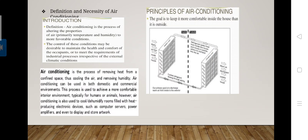The definition of air conditioning system is the process of altering the properties of air at the primary temperature and humidity to more favorable conditions. The control of these conditions may be desirable to maintain the health and comfort of the occupants or to meet the requirements of industrial processes, irrespective of external climatic conditions. Air conditioning is defined as the simultaneous control of temperature, humidity, moisture content in air, motion, and purity — by air filtering, cleaning, and purification of air within an enclosed space.